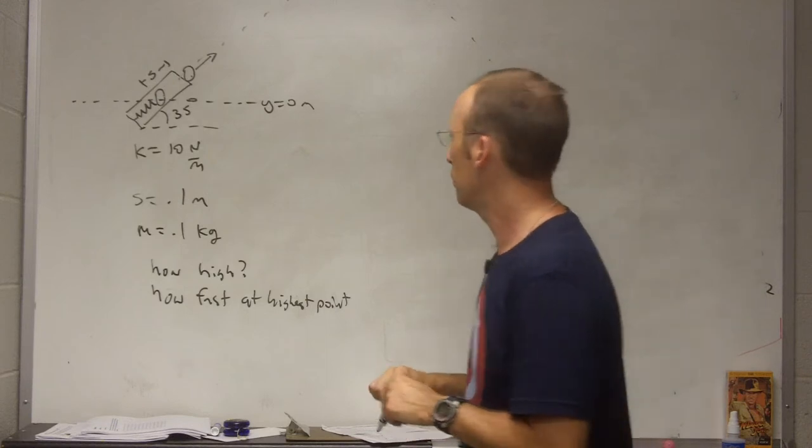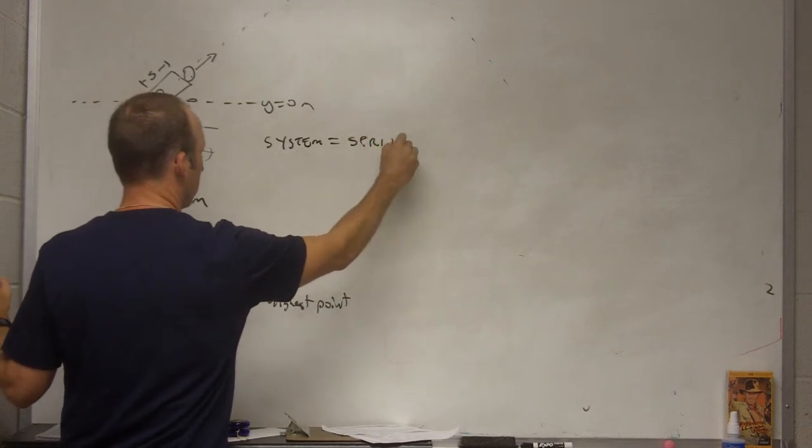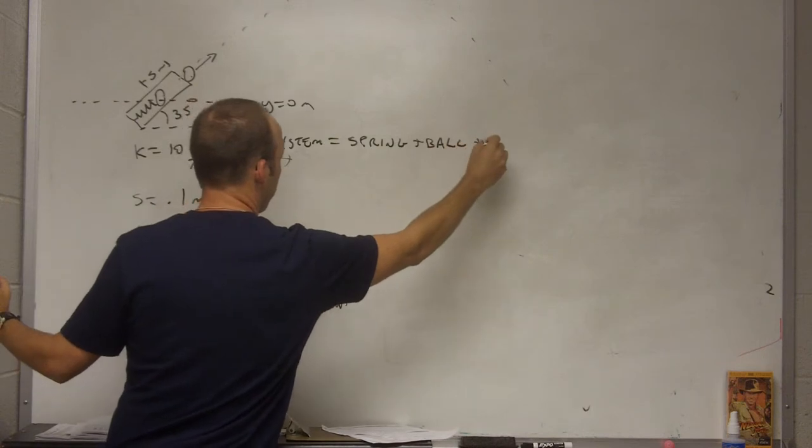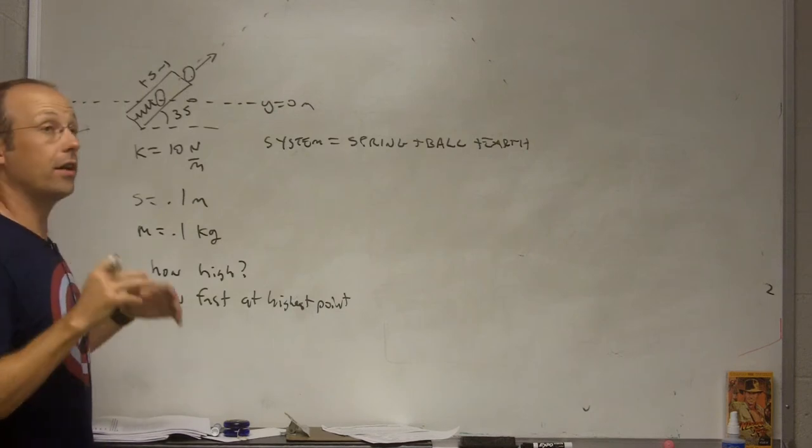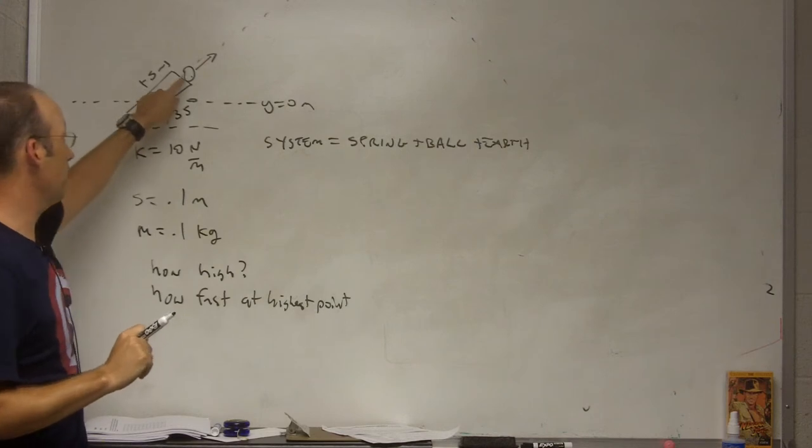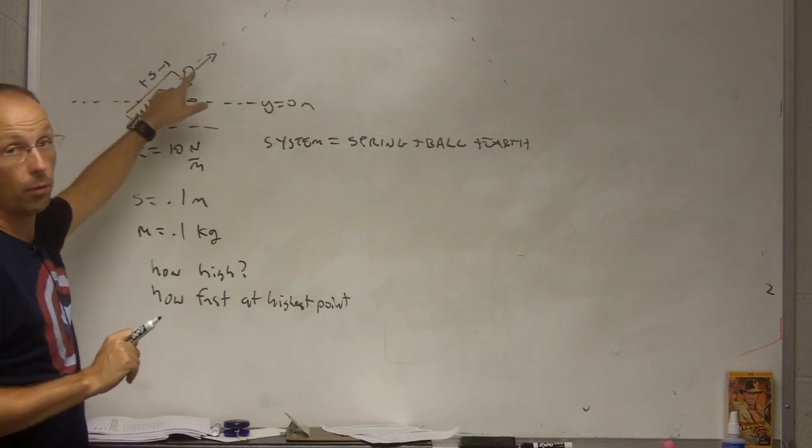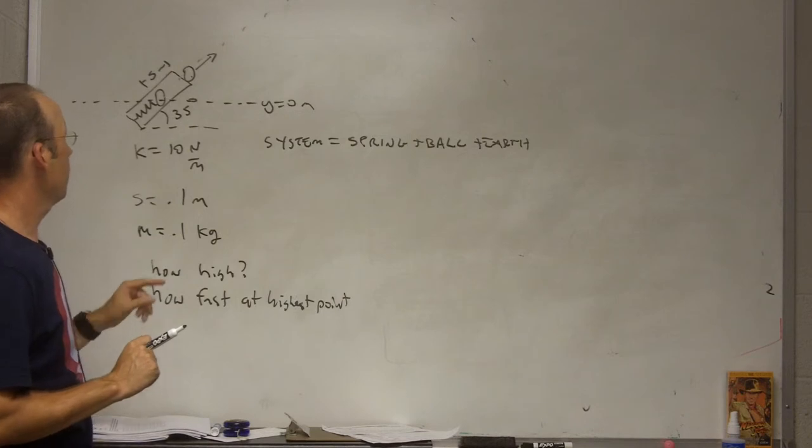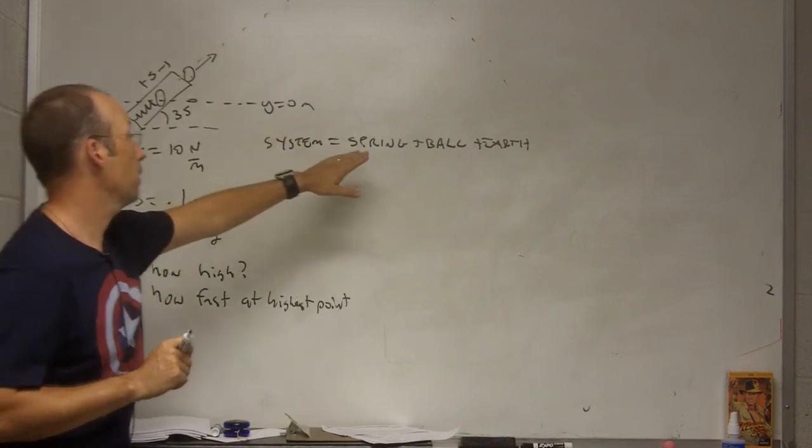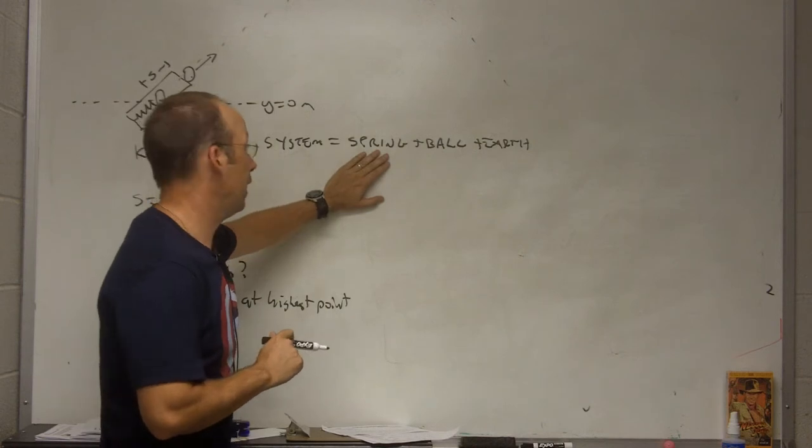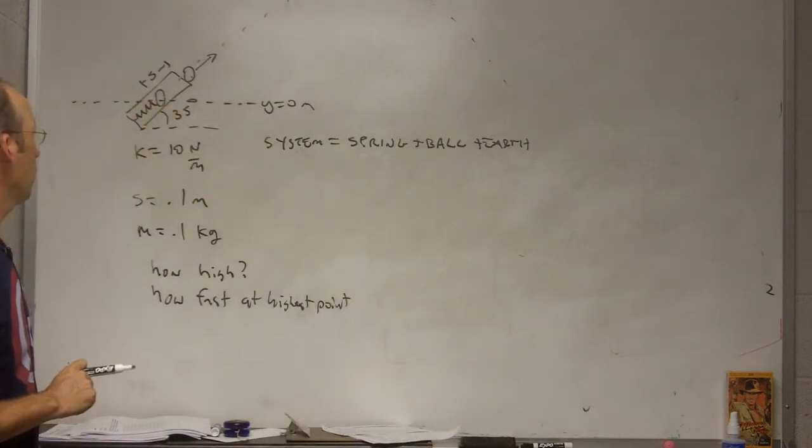The next thing I need to say is what's my system. In this case, my system is going to be the spring plus the ball plus the earth. Why? Well, if I don't do that, what if I just had the ball? First, I'd have the work done by the spring during this part because the spring exerts a force on it. Not easy because that force changes as it gets further and further away. So that would be very difficult to do. Second, as it moves up and down, I'd have to include work done by gravity. It turns out that if I use all these things, if I have the spring in my system, then I can have spring potential energy. If I have the earth and the ball, I can have gravitational potential energy.